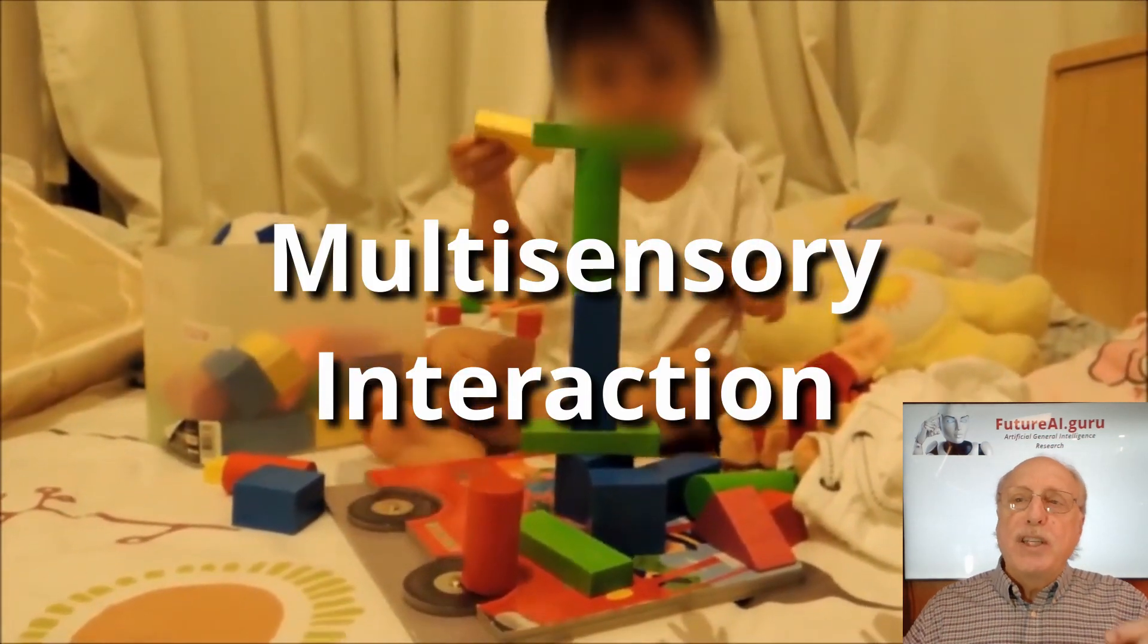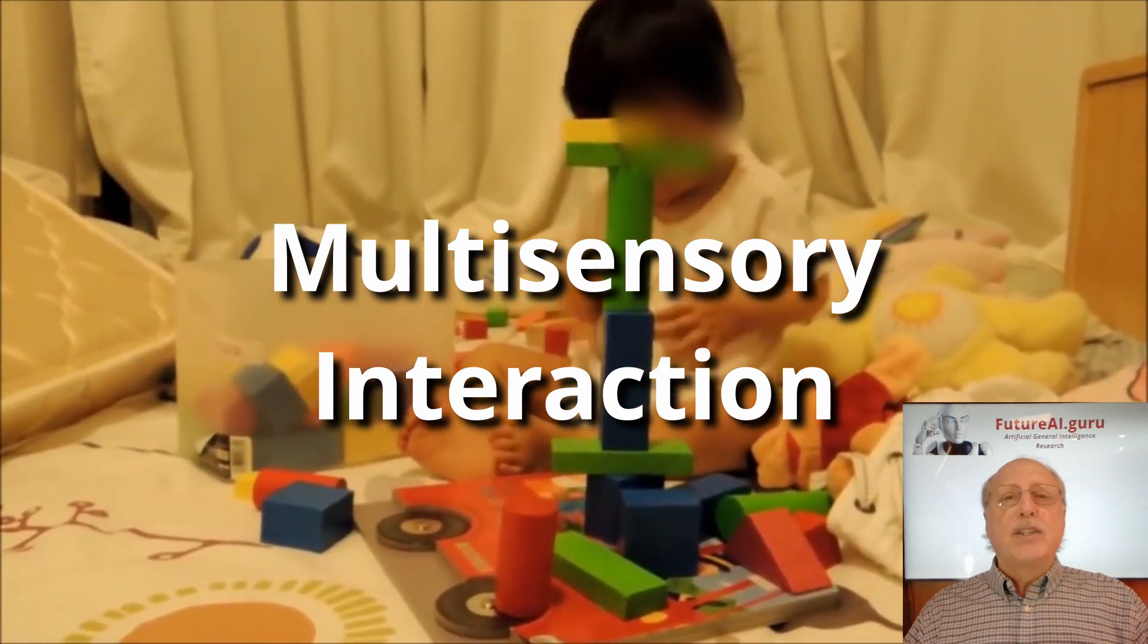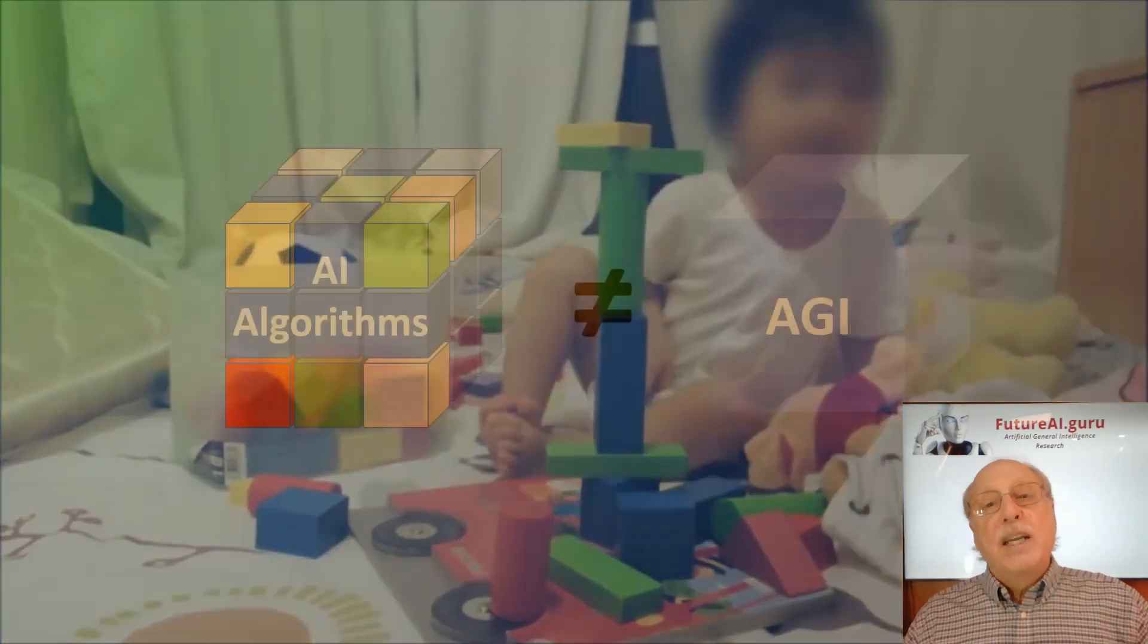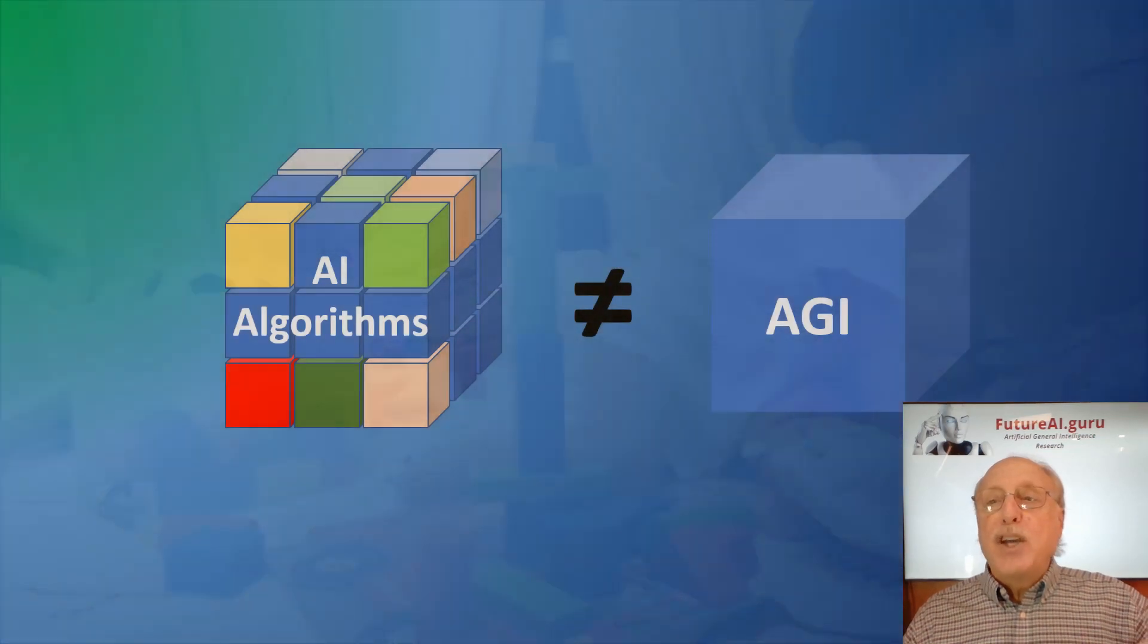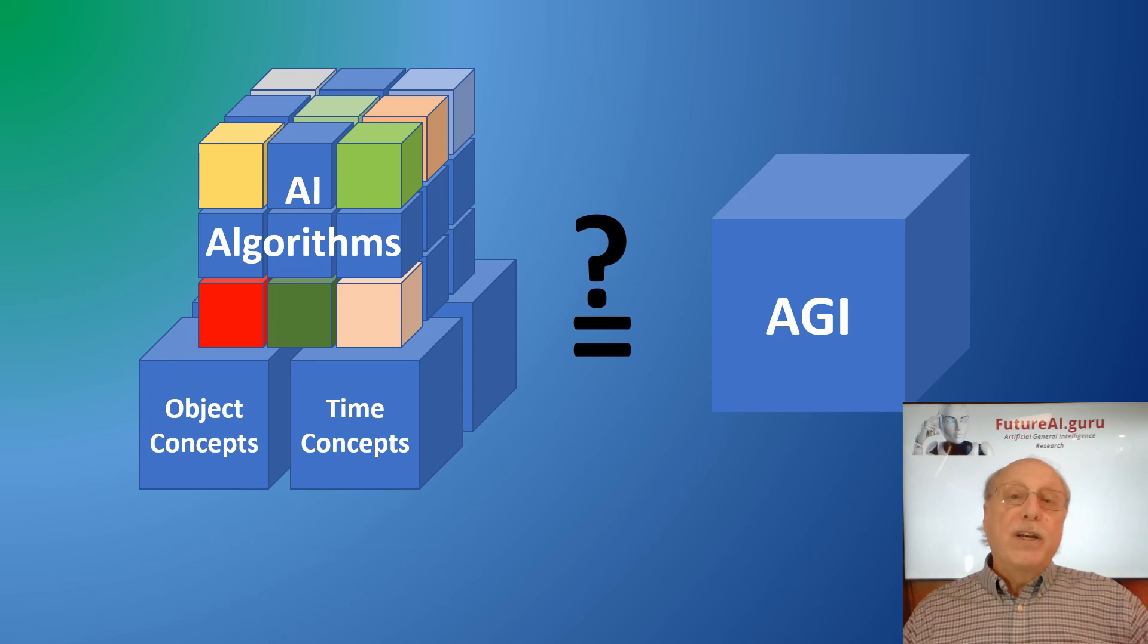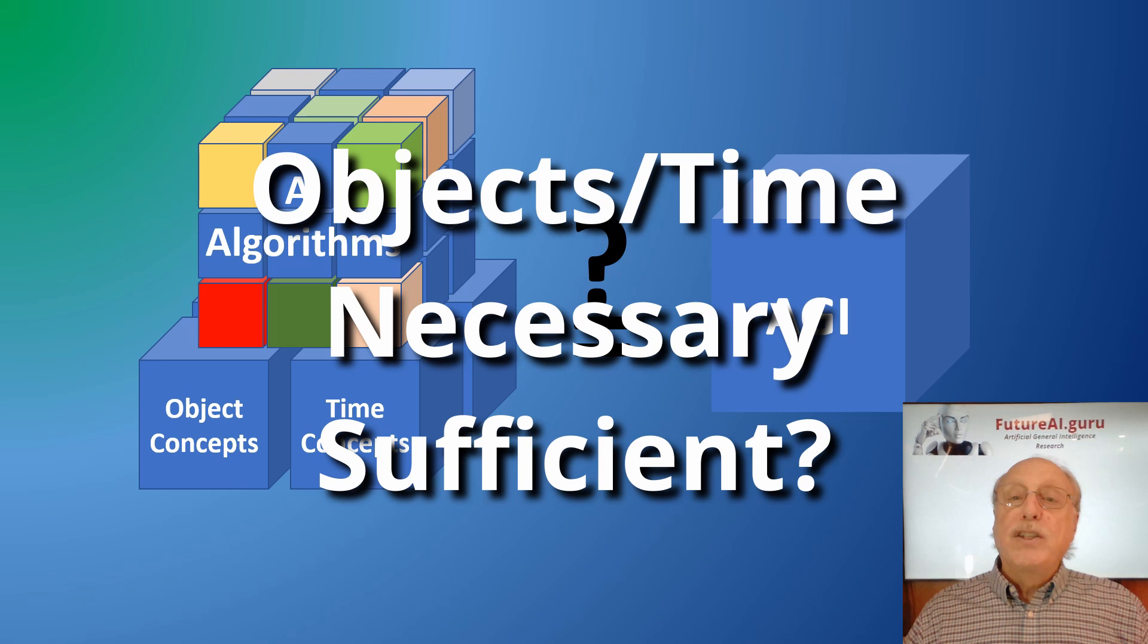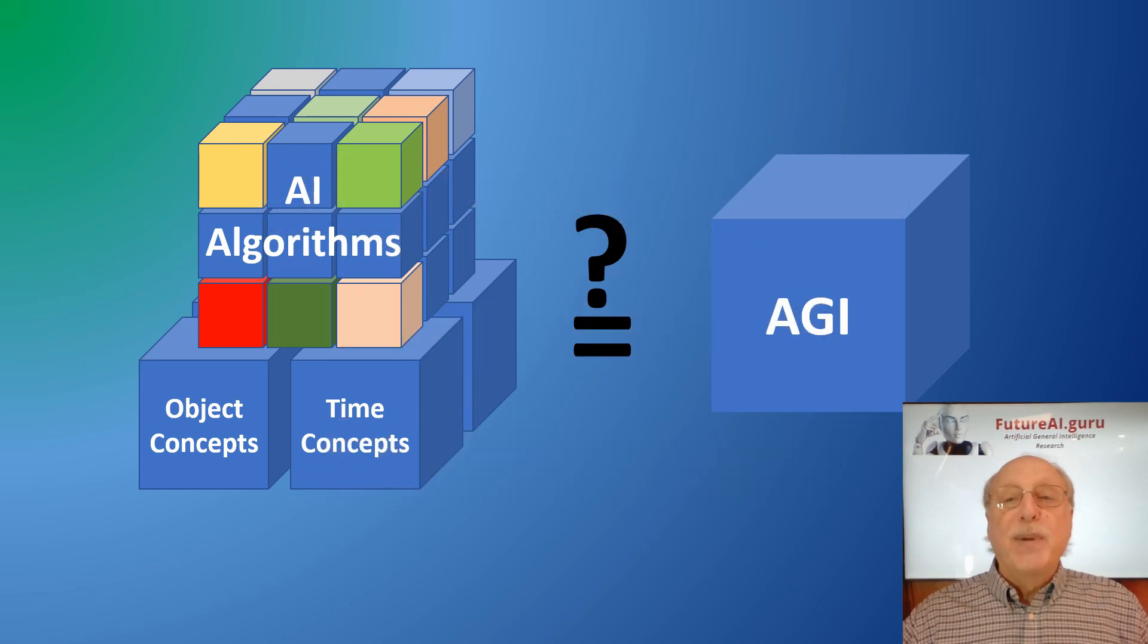She knows these things because she has multi-sensory input and can interact with objects in her environment. I see these basic capabilities common to any three-year-old are missing from today's AI and are fundamental building blocks for AGI. Concepts such as physical objects and time I see as necessary components. Whether they are sufficient to create AGI remains to be seen.